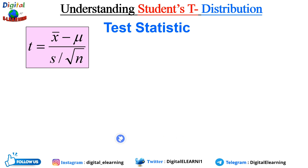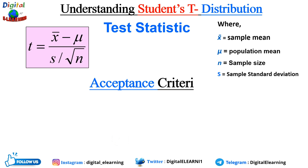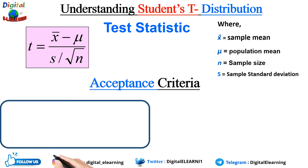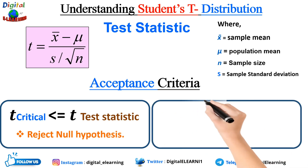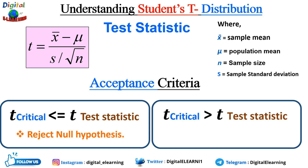The test statistic formula is: t = (x̄ − μ) / (s / √n), where x̄ is the sample mean, μ is the population mean, n is the sample size, and s is the sample standard deviation. For acceptance criteria: if the t-critical value is less than or equal to the test statistic, we reject the null hypothesis. If the t-critical is greater than the test statistic, we fail to reject the null hypothesis.